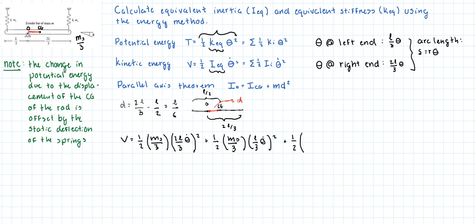Then we're going to add the inertia of the bar. Where ICG is equal to 1 over 12 times mass times length squared. So 1 over 12 times mass times length squared plus the mass times d, and d is L over 6 squared, times theta dot squared.